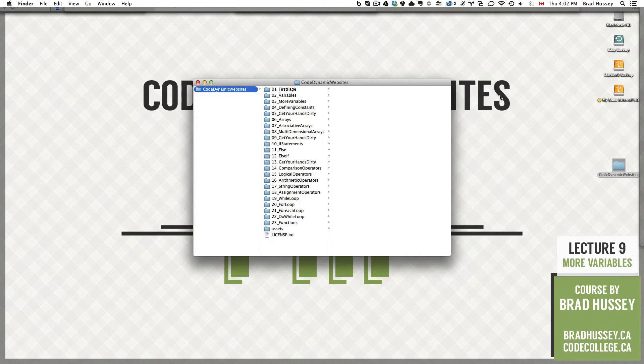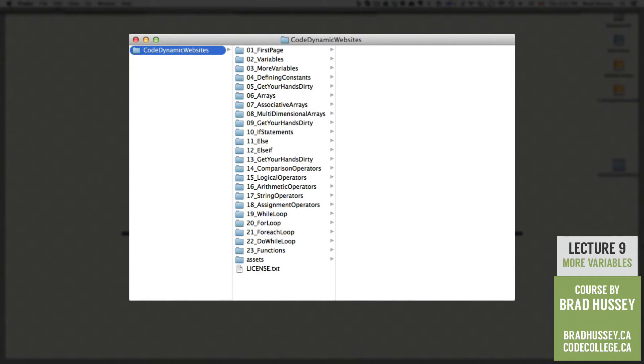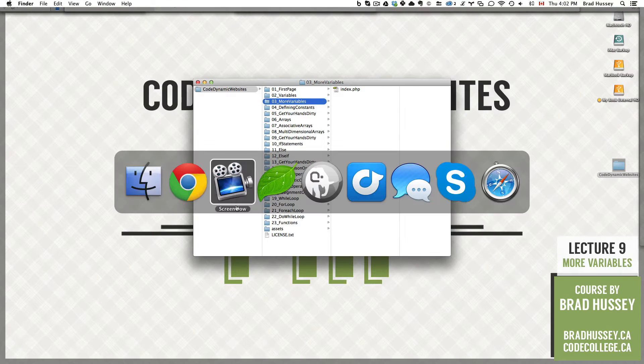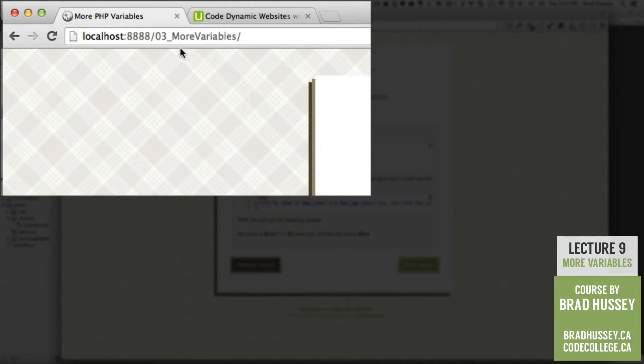As usual, feel free to follow along using the course files that you downloaded in your Code Dynamic Websites folder. We're in 03 More Variables. What I suggest doing is navigating to localhost, port 8888, I think that was right, 8888, 03 More Variables.